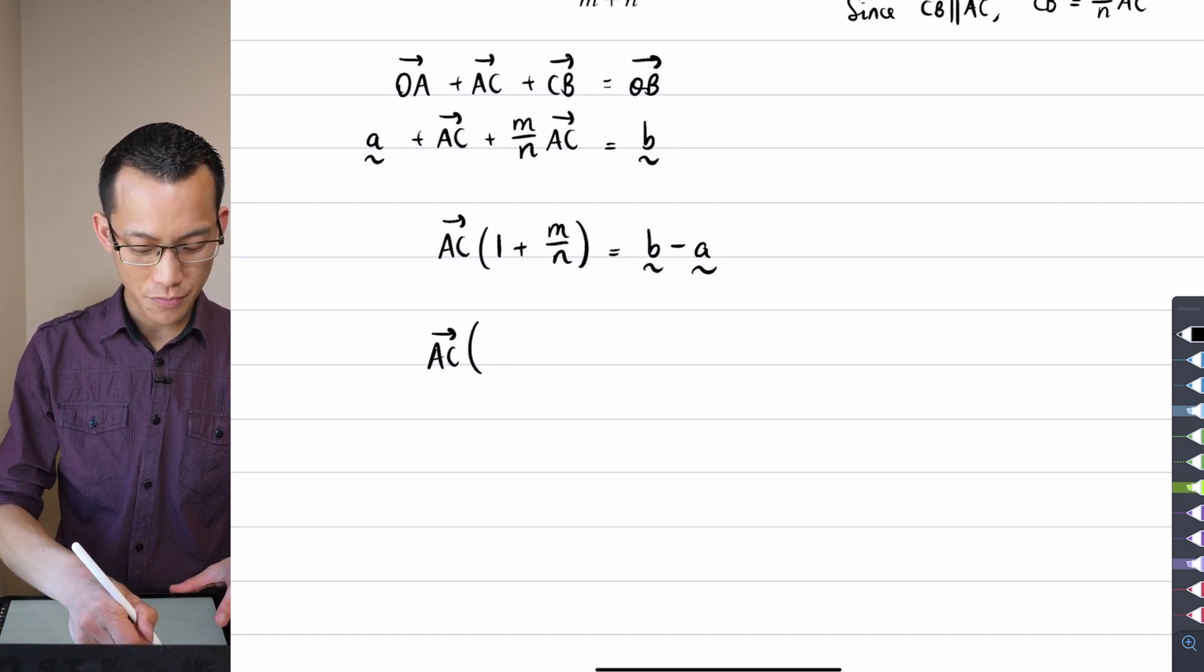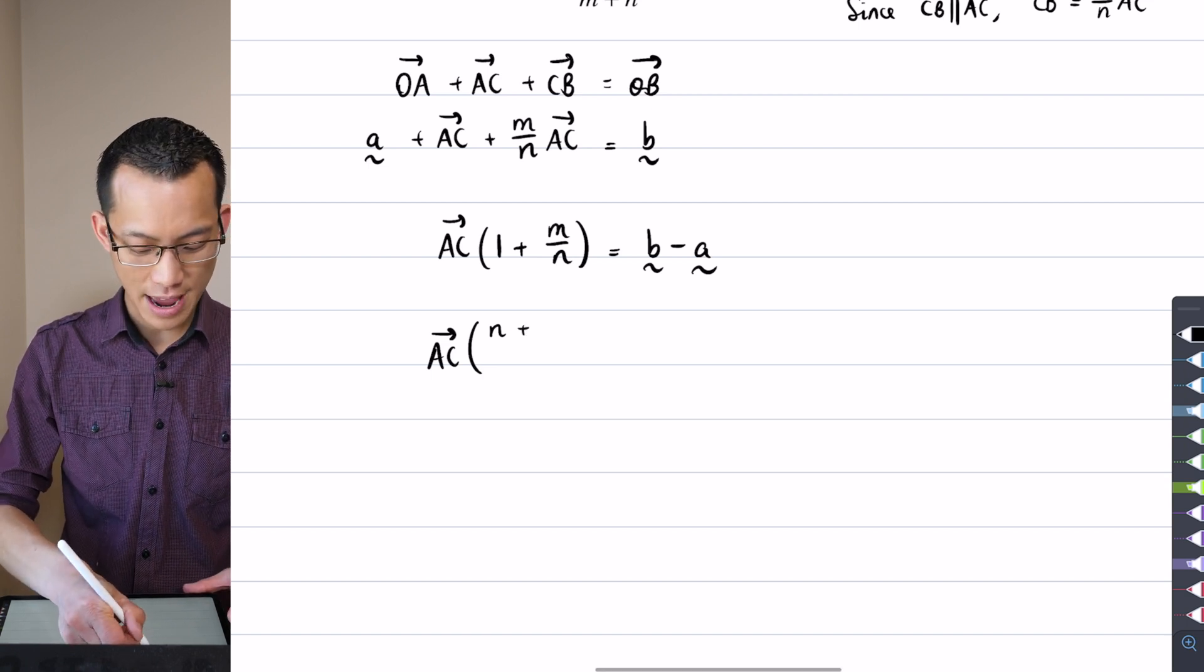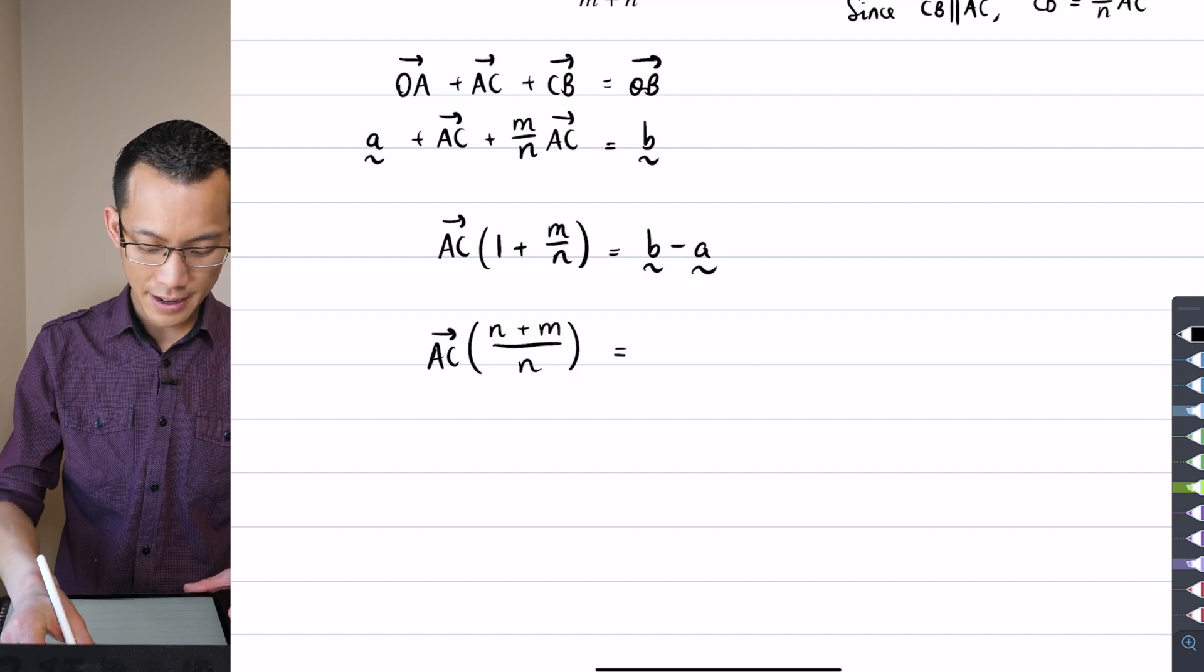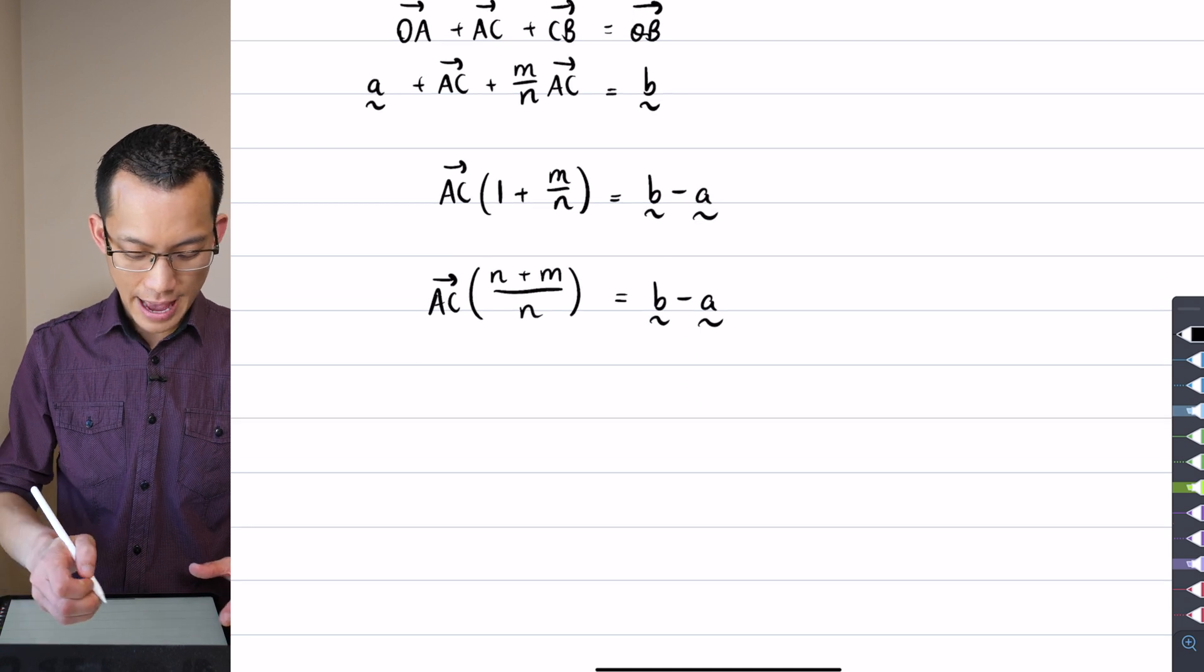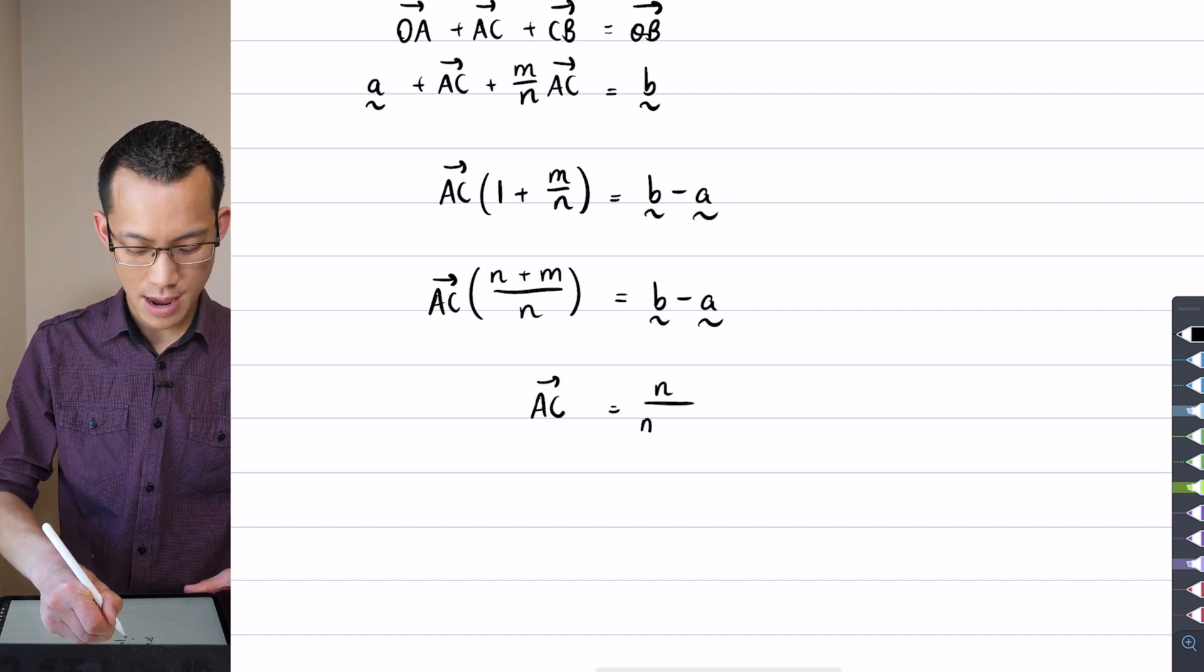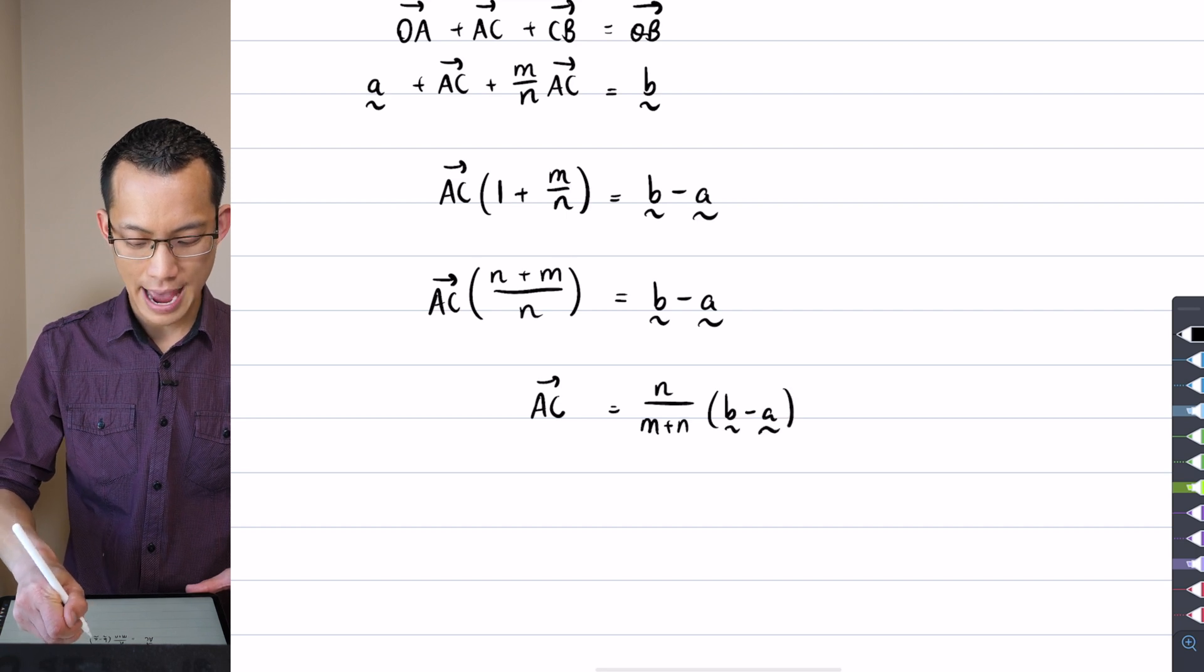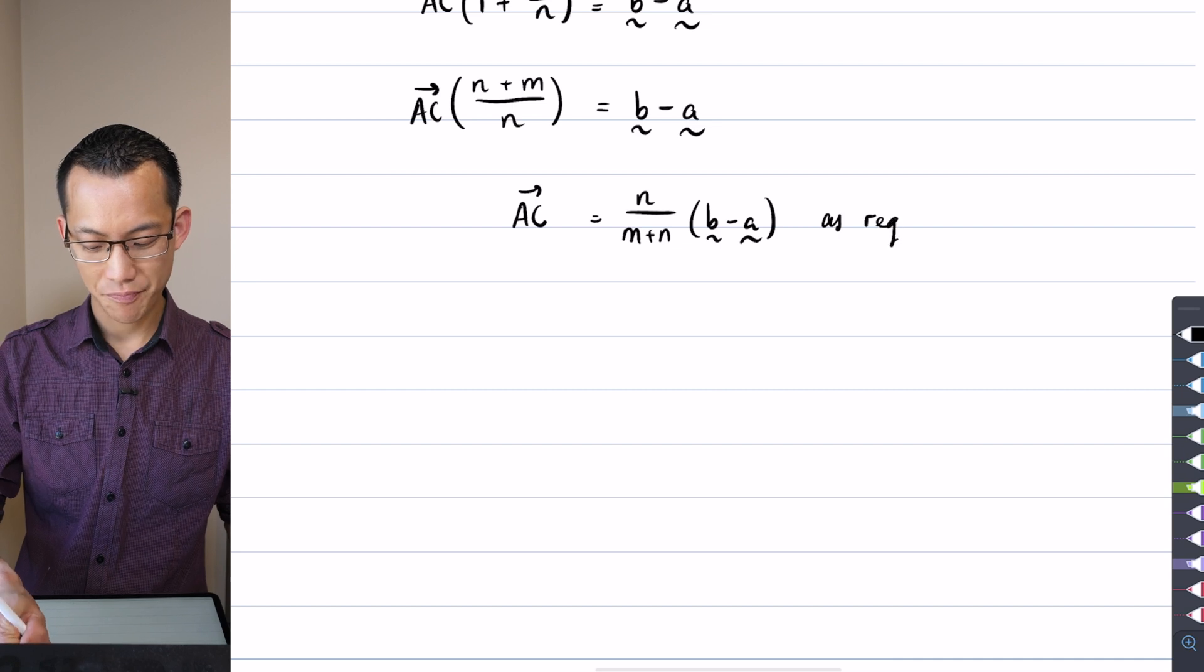I'm just going to combine into one fraction to make the division a bit easier. And you can't skip this, it's a show that question. So don't go past this crucial part of the logic. This is going to be N over N, that's the one. So N over N plus M over N will give you this. Nothing has changed over here on the right-hand side. And then I just need to divide through. So I will do AC to N on N plus M, and then here's the B minus A that we're required to prove. That's it, as required.